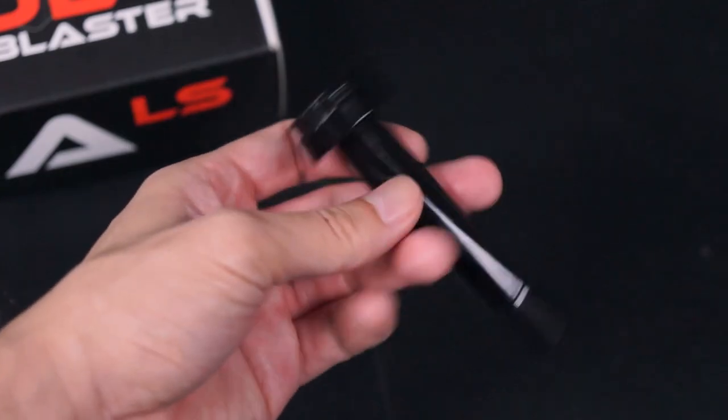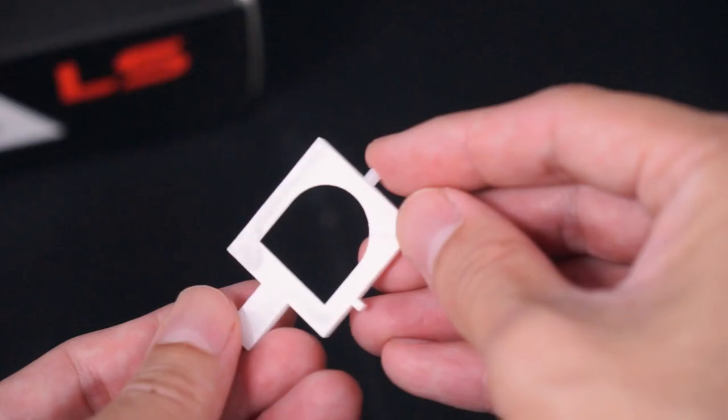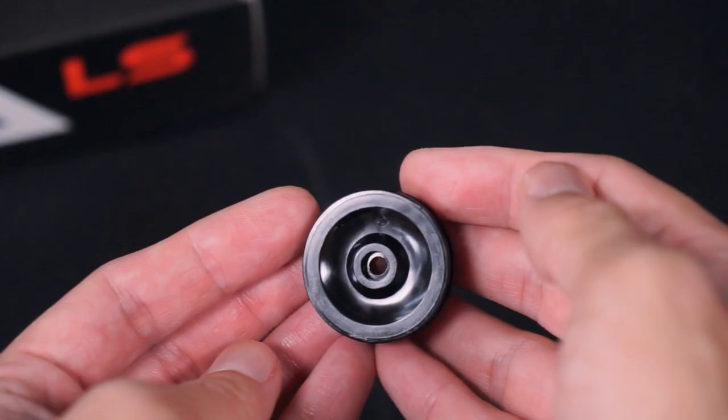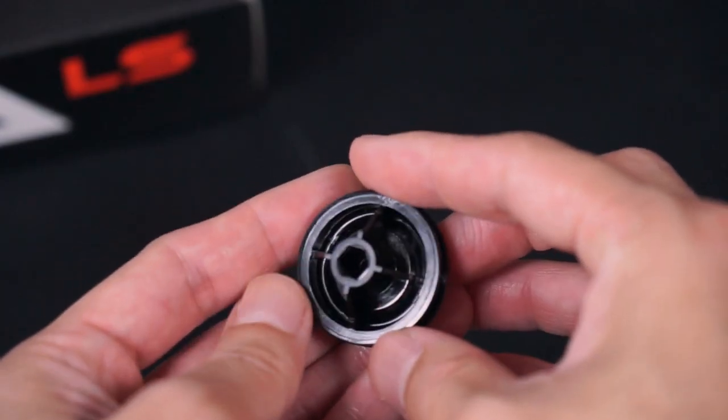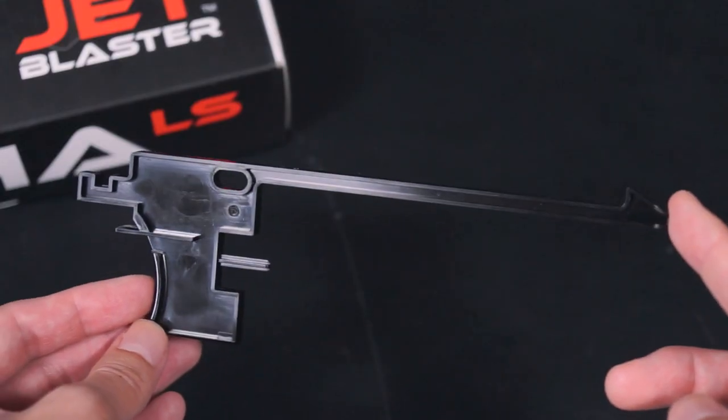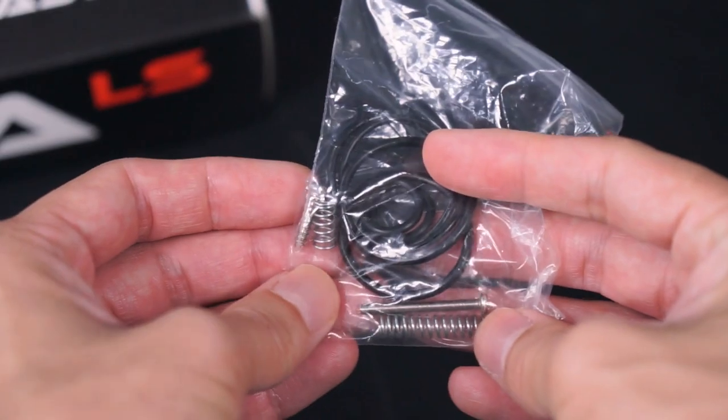The plunger pusher, a catch blade, the plunger tube, a plunger head, the end cap, the trigger, and a bag of o-rings, screws and springs.